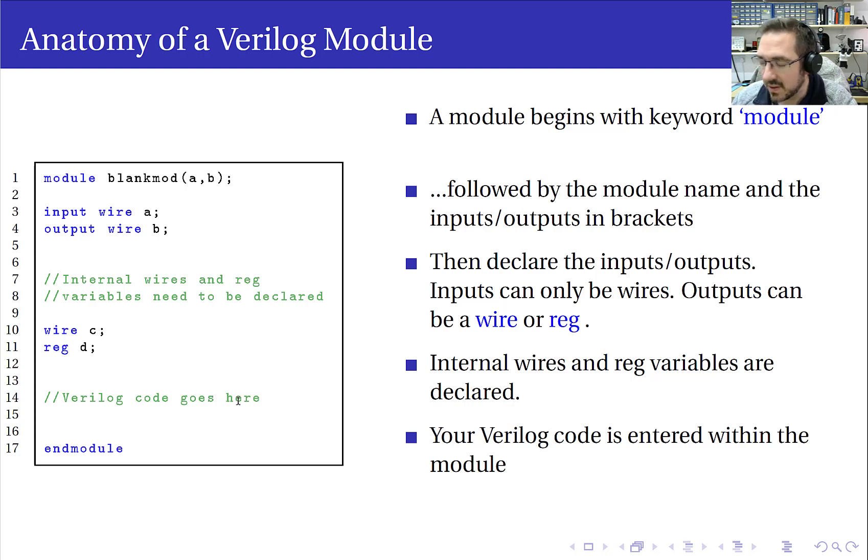So the next thing you do, obviously, the whole purpose of the module is to package some logic. So this is where you start writing your Verilog code. This is where you'd have your always blocks and your combinational modules and instantiations of other modules. This is where you would put that code. Now, to finish the module, you use the keyword endmodule. And that finishes the module and then that completes the code for that particular module.